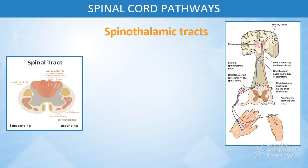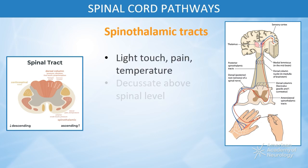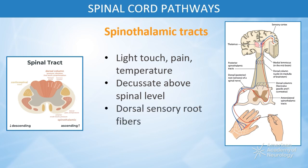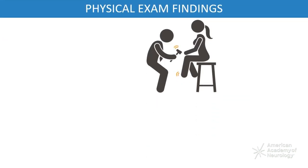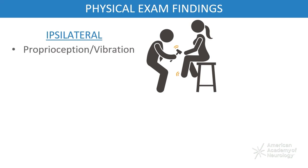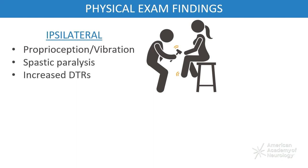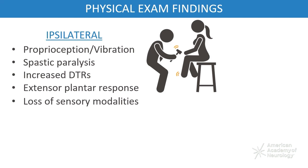Finally, the spinothalamic tracts carry temperature and pain sensation and decussate just above the spinal level where the dorsal sensory root fibers enter the cord in the anterior commissure. Patients with Brown-Séquard syndrome will commonly have physical exam findings ipsilaterally that include loss of proprioception and vibration below the level of the lesion, spastic paralysis and increased deep tendon reflexes below the level of the lesion, extensor plantar response, and often loss of all sensory modalities and flaccid weakness at the level of the lesion due to injury of the anterior horn cells and fibers of the anterior commissure.